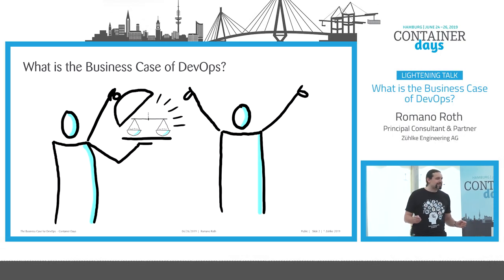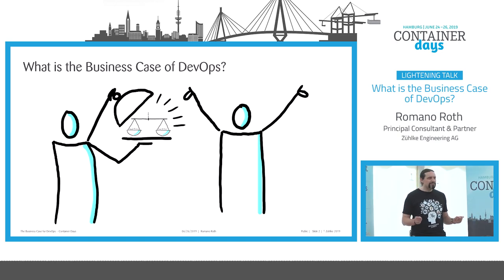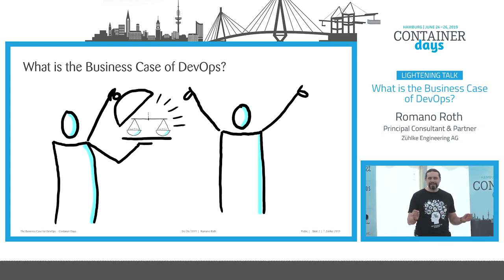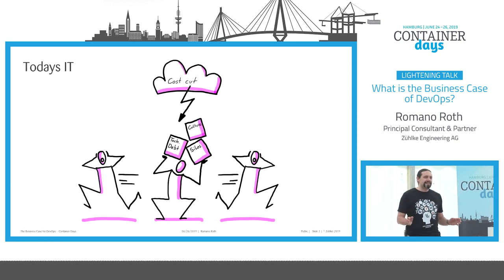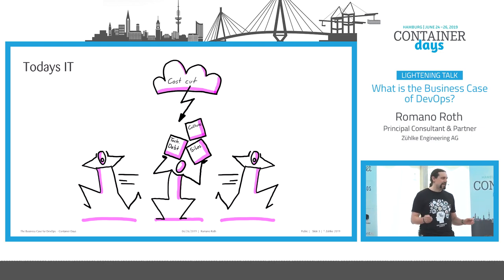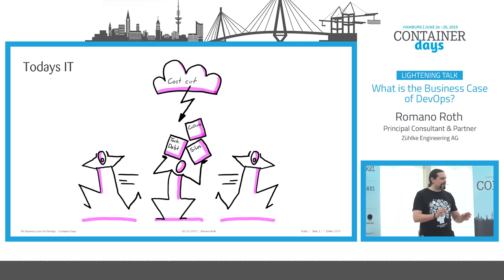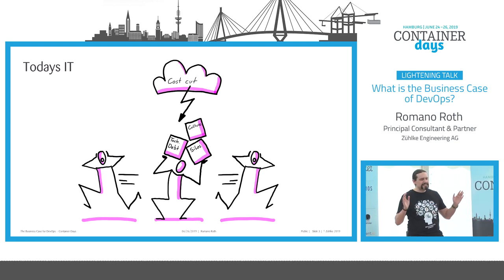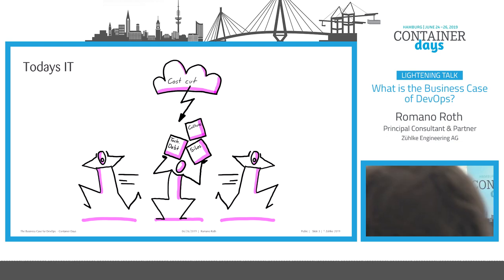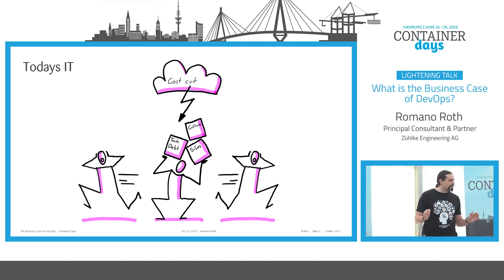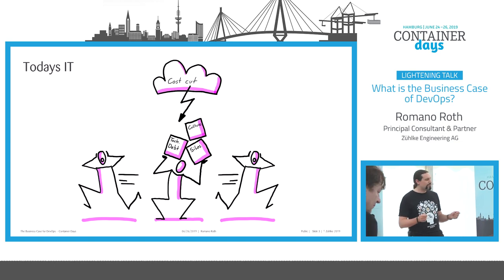What is the business case of DevOps? Today's IT has a lot of problems. They have technical debt in their application landscape, in their applications, and also in their infrastructure. And then there are these silos which are not working together but are fighting against each other. There is a culture which does not accept risk and innovation, and there is a complete lack of trust. And overall, we have cost cuts — we need to do more with less money.